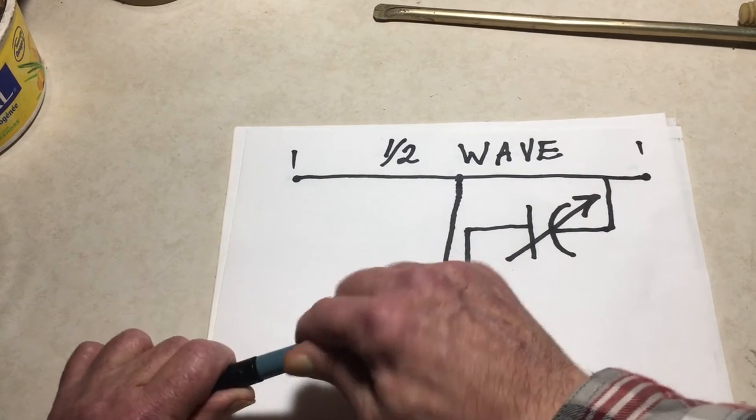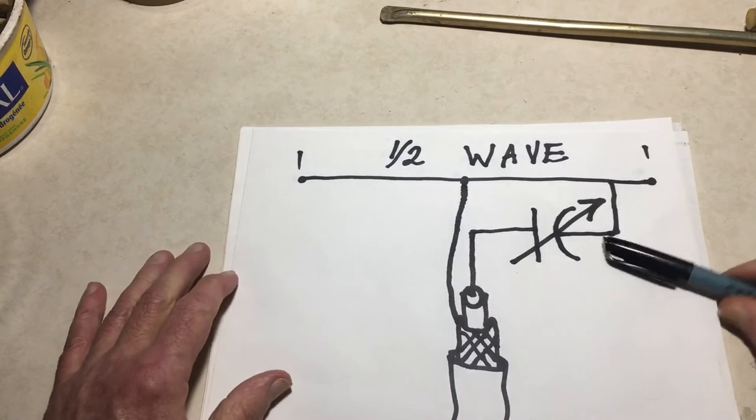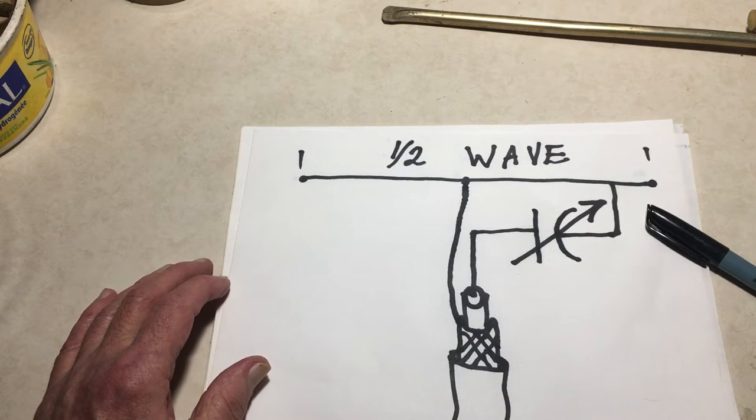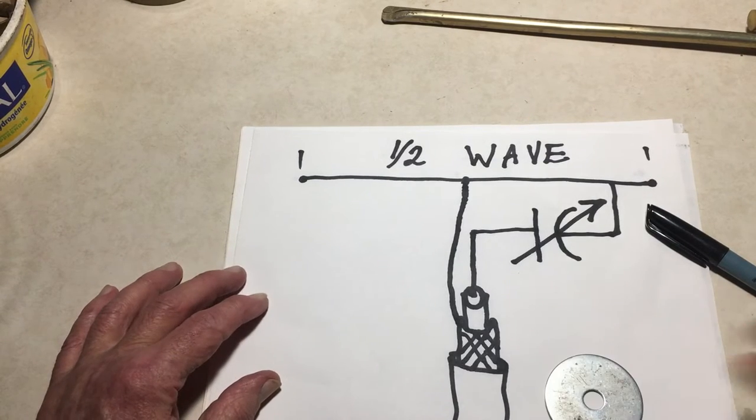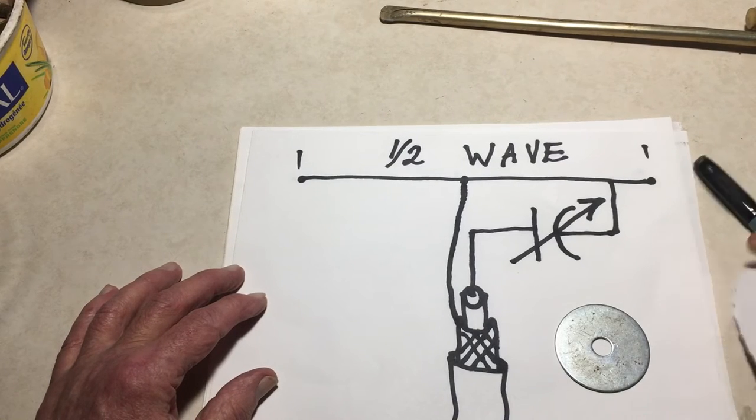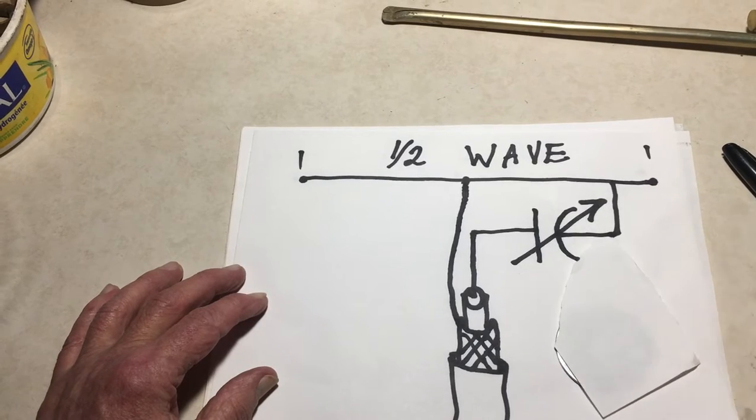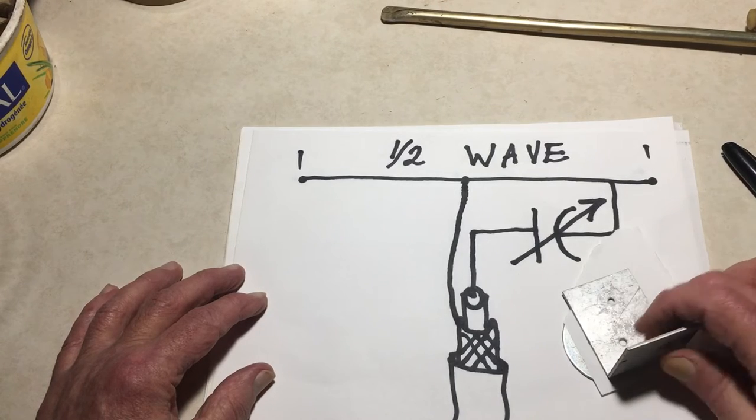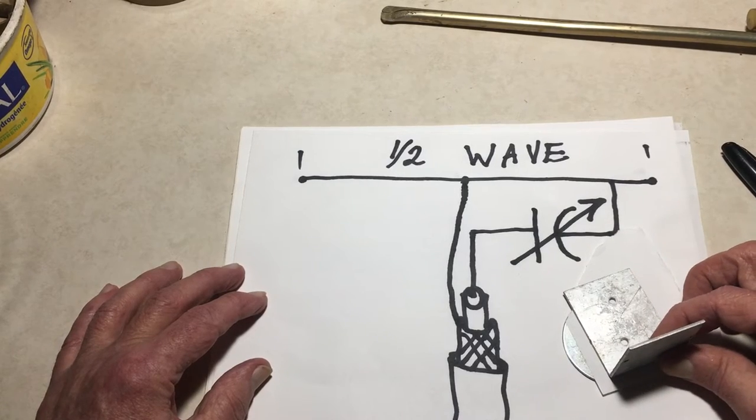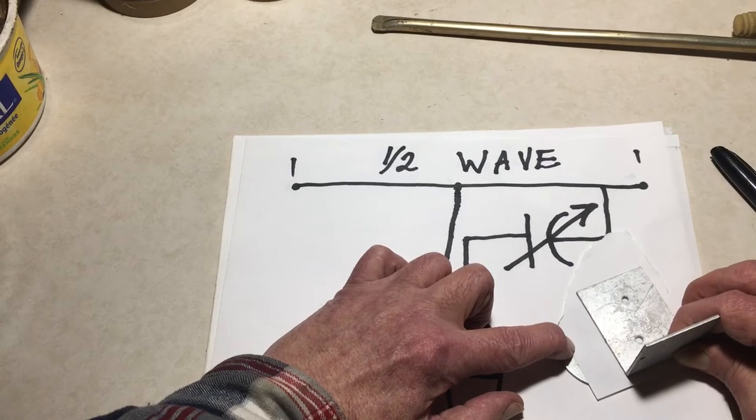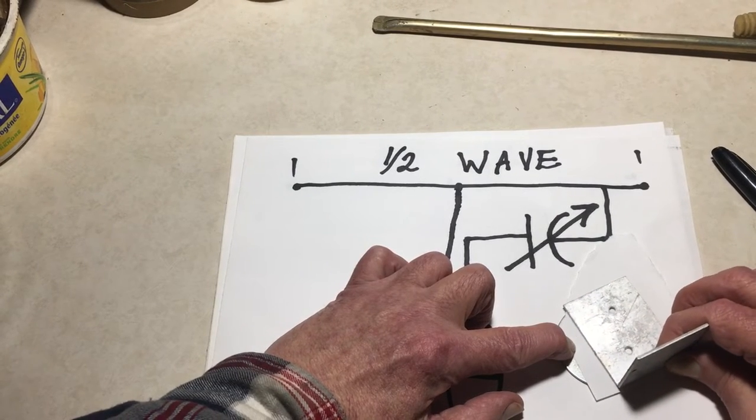Now a capacitor by its simplest terms is two conductive plates separated by a dielectric. So conductive would indicate that it'd be some sort of metal, and the two plates separated by a dielectric can be shown here. This is a simple capacitor. We have two plates separated by a dielectric. If I vary the amount of surface area, this will vary the capacitance, the amount of capacitance.